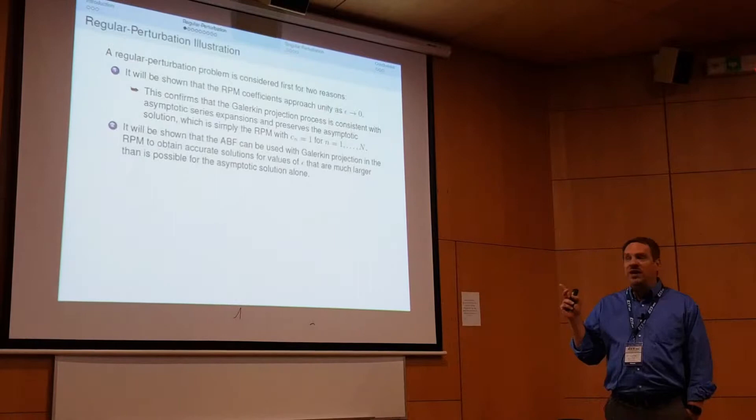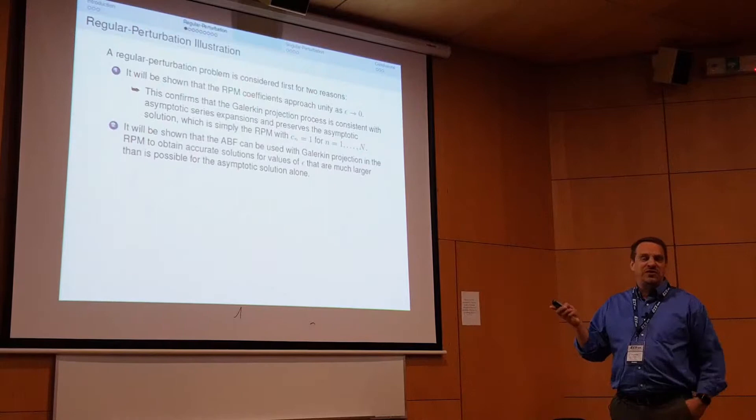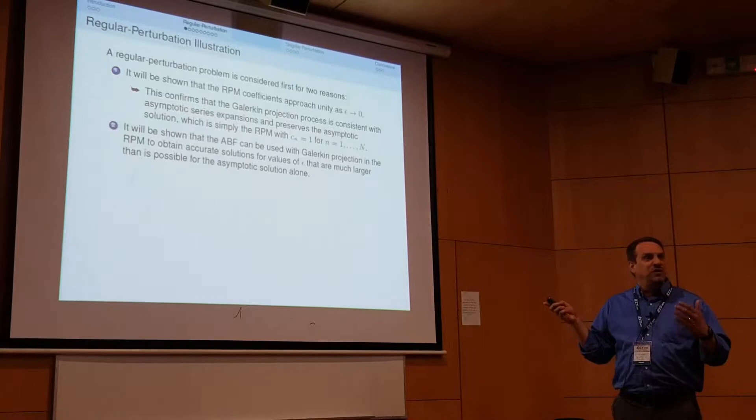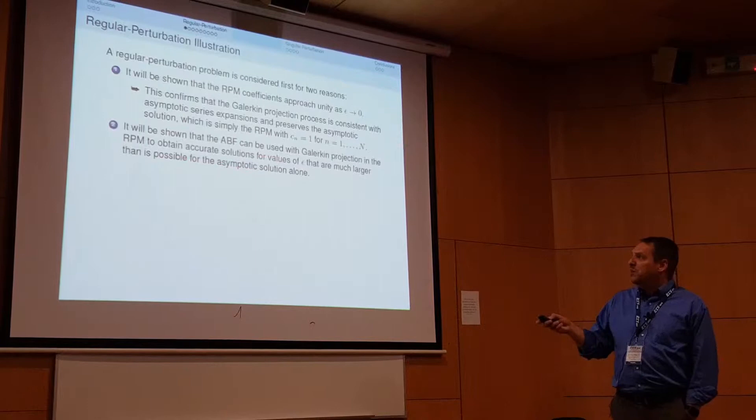In the regular perturbation problem, I want to show two things. First, the RPM coefficients — the C coefficients we get after Galerkin projection — should approach one as the small parameter goes to zero. This is a good consistency check: does the Galerkin projection produce the expected result as epsilon goes to zero?